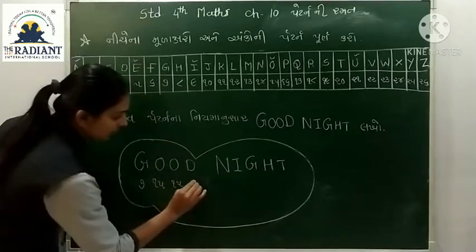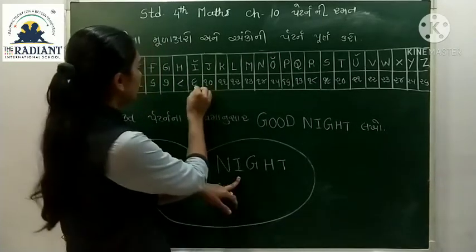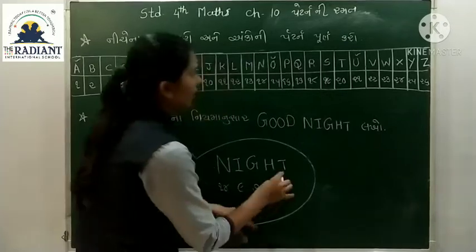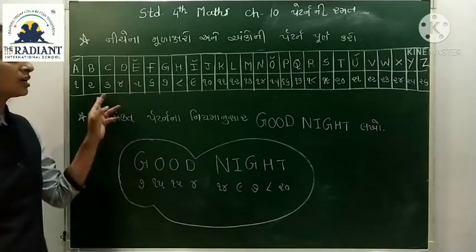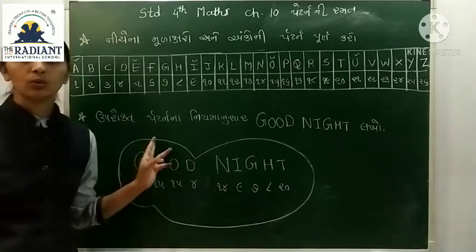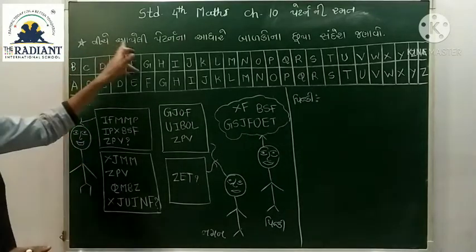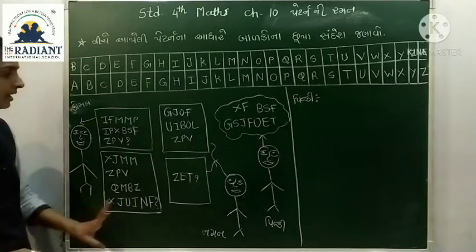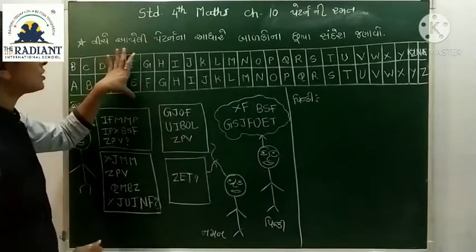O છે તો એની નીચે 15. D છે તો 4. N છે તો 14. I છે તો 9. G છે તો 7. H છે તો 8. T છે તો 20. આ રીતે આ અંકો ની પેટર્ન આ રીતે આપણે કરી શક્યા.